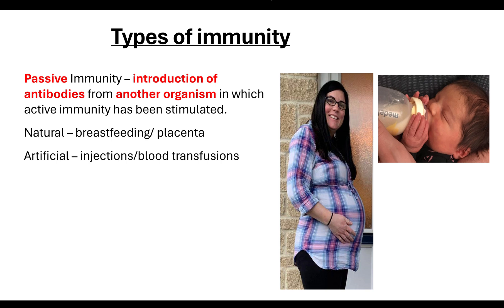Another way that this can happen, which is an artificial way, is where they are given an injection. For example, if you've ever had a tetanus shot or had to have an injection for rabies, that is where they have taken the antibodies against the toxins and injected them into the body. It can also happen through a blood transfusion. That's passive immunity — an introduction of these antibodies from another organism.